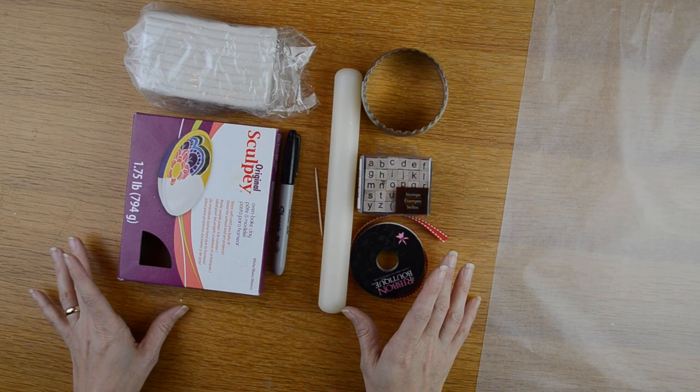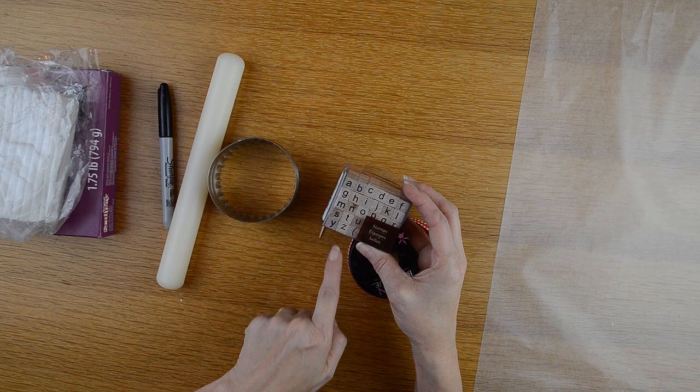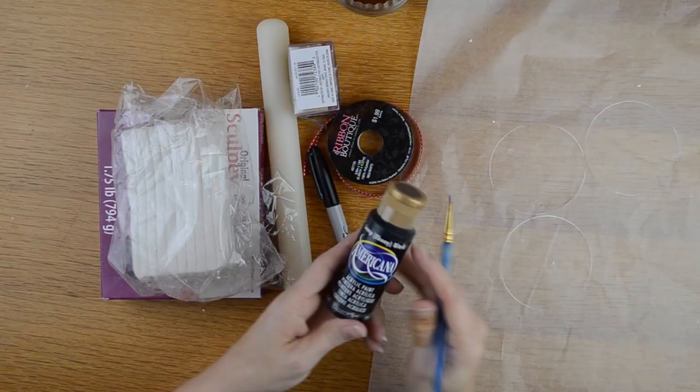For these ornaments I'm going to be using white Sculpey clay, a rolling pin and a circle cookie cutter. I'm going to be using these small letters and they are all lowercase and I picked these up from Michaels. I'm also going to be using some ribbon and a toothpick.